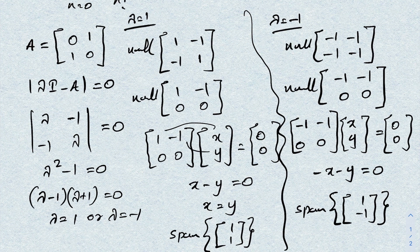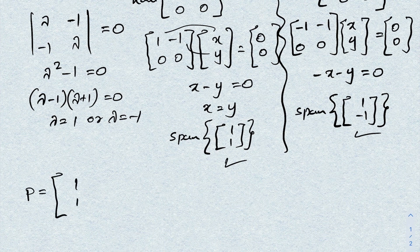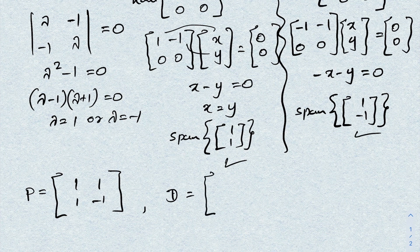Now we can write the matrix of corresponding eigenvectors: P = [[1,1],[1,-1]]. Also, D is the diagonal matrix of eigenvalues: D = [[1,0],[0,-1]].